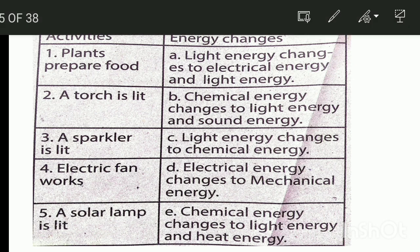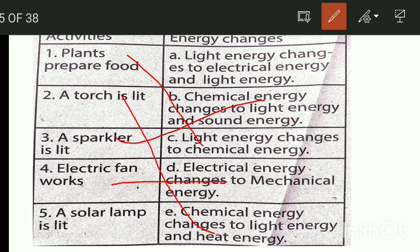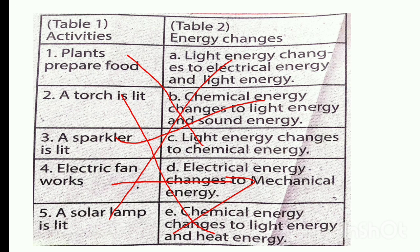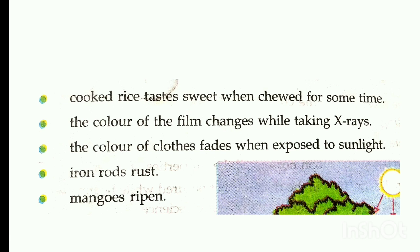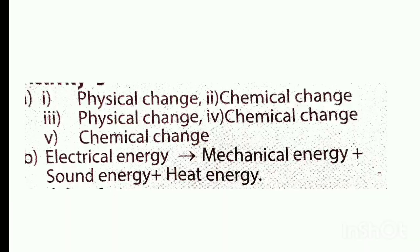Energy transformations: light energy changes to chemical energy — a torch light; chemical energy changes to light energy and heat energy — a sparkler; chemical energy changes to light energy and sound energy — electrical fan work; electrical energy changes to mechanical energy — solar lamp; light energy changes to electrical energy and light energy. We will discuss this in chapter 5 and chapter 2.